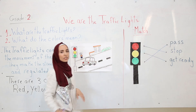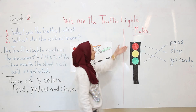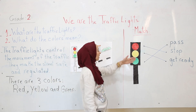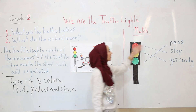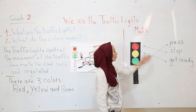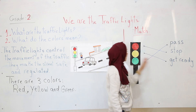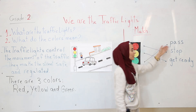So these are the traffic lights. Red means stop. Yellow means get ready. And green means pass.